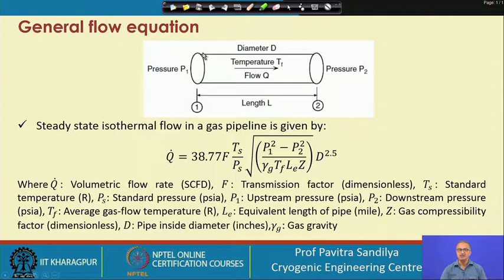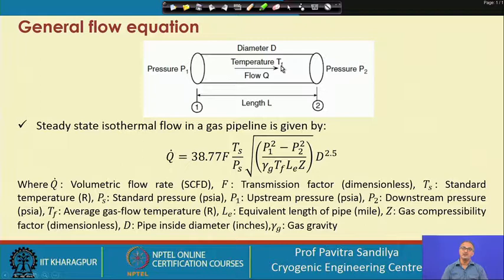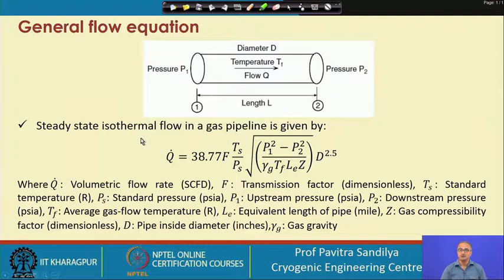The basis of the derivation involves a pipeline with inside diameter D, inlet pressure P1, outlet pressure P2, section length L, fluid temperature T_F, and flow rate Q. We assume temperature remains constant while pressure varies from inlet to outlet. If pressure were not varying, there could be no flow — so P1 must be greater than P2.